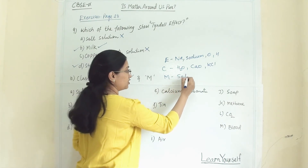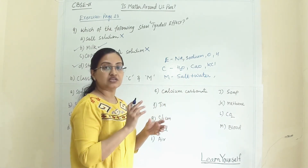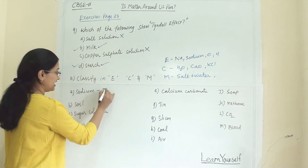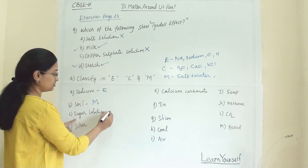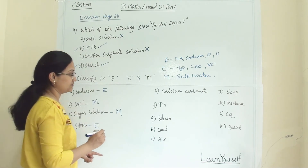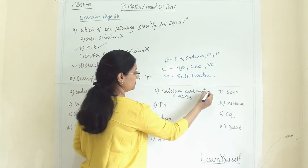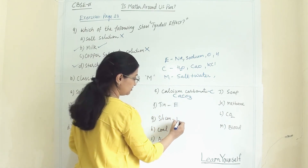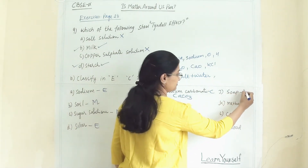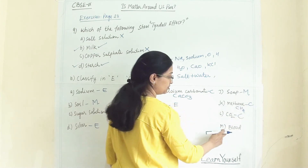Mixtures are physically combined substances. Sodium — element. Soil — mixture. Sugar solution — mixture (not chemically combined). Silver — element. Calcium carbonate (CaCO3) — compound. Coal — mixture. Air — mixture. Soap — mixture. Methane (CH4) — compound. Carbon dioxide — compound. Blood — mixture.